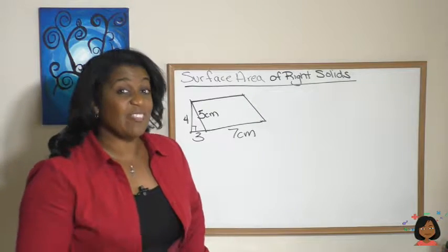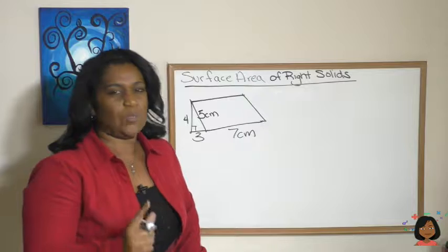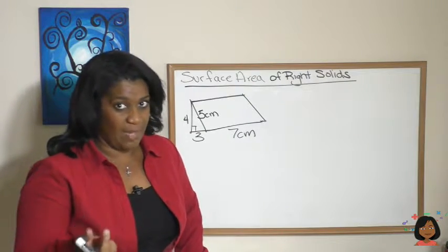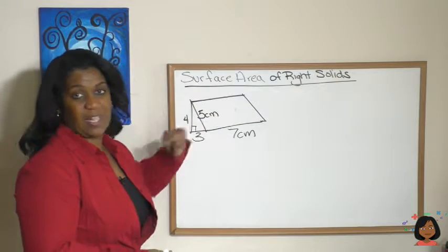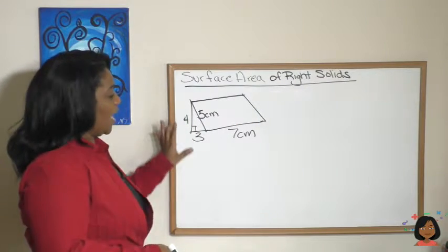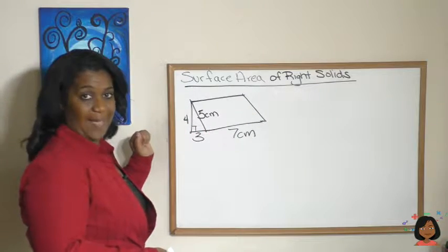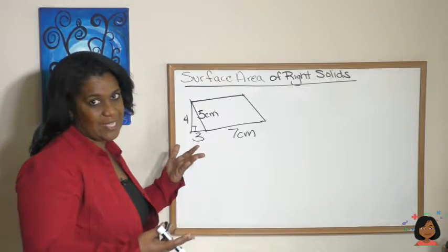Let's try another kind of right solid. Here we have a triangular prism. Let's think about it. How many faces does a triangular prism have? Well, we've got a triangle on this side and a triangle on this side. But then we've got a rectangle on the front, a rectangle on the back, and a rectangle on the bottom.